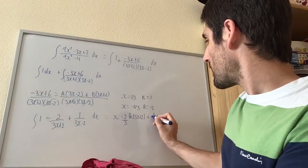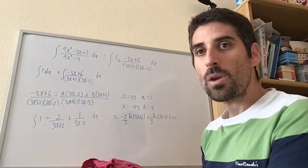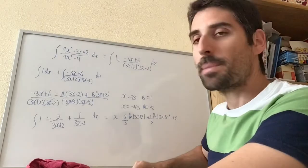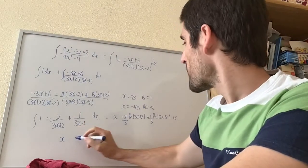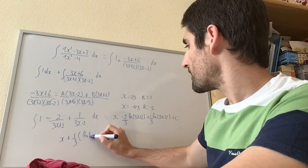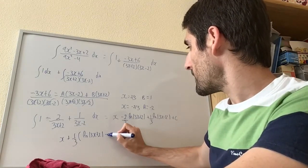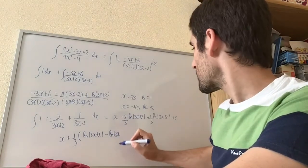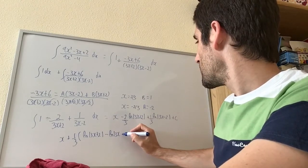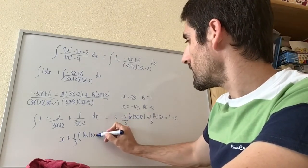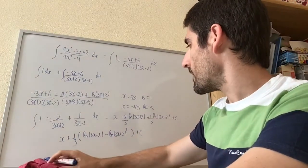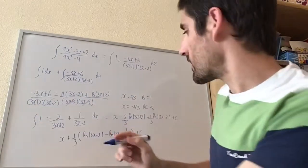Adjusting coefficients and dividing by 3, we get x minus two-thirds log|3x plus 2| plus one-third log|3x minus 2|, plus a constant of integration C. Tidying up using rules of logs, this simplifies to x plus one-third times log of (3x minus 2) over (3x plus 2) squared, plus C.